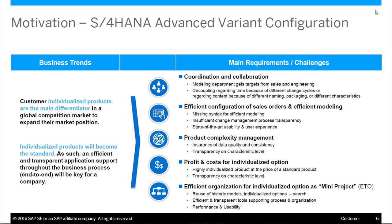Business trends are moving more toward customers wanting individualized and specialized products — something specific that fits their needs. This drives product or solution configuration, and a lot of those main requirements drive coordination and collaboration efforts, so the modeling departments have to get in line with sales and engineering. The efficient configuration of sales orders and efficient modeling means that placing an order and creating models both have to be easy, while managing complex products and reducing complexity in the model.